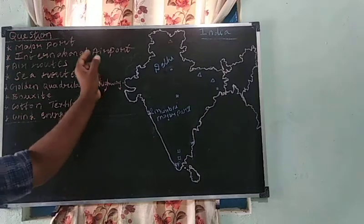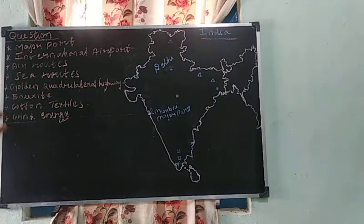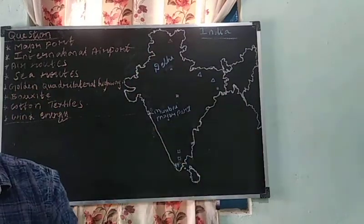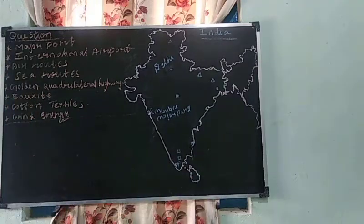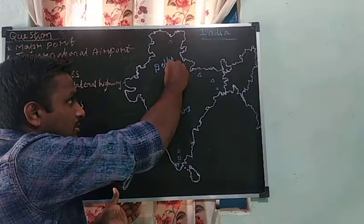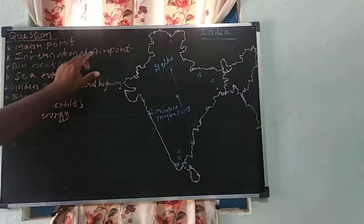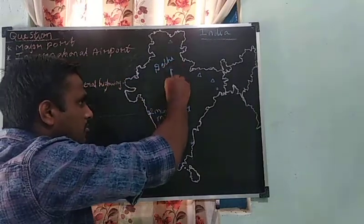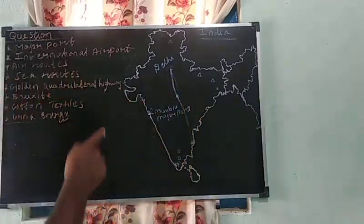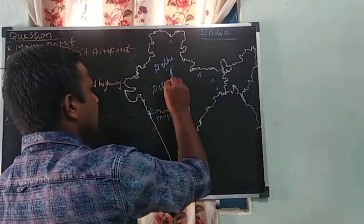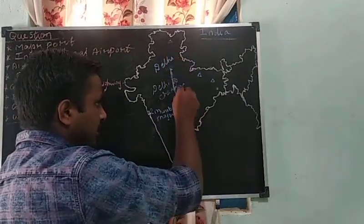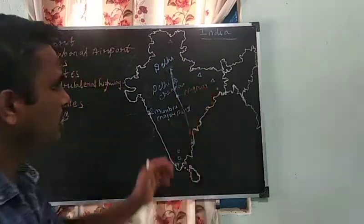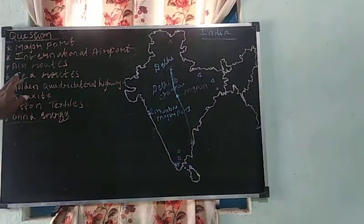Next one is air route. The air route connects New Delhi to Chennai. From Delhi, it connects to Nagpur, and from Nagpur it connects to Chennai. So the air route is connecting Delhi to Chennai via Nagpur.